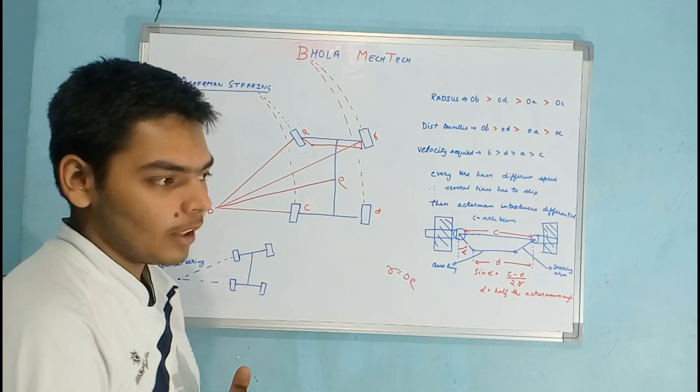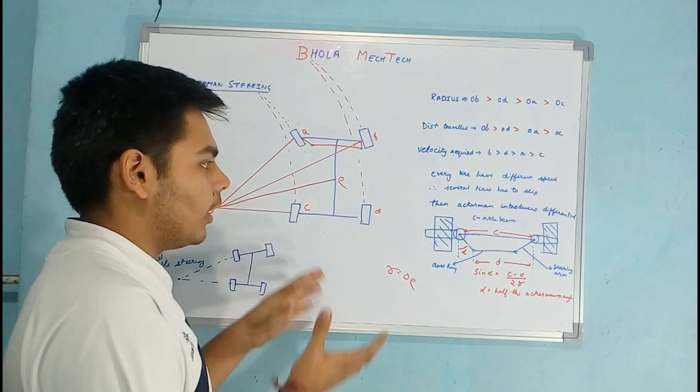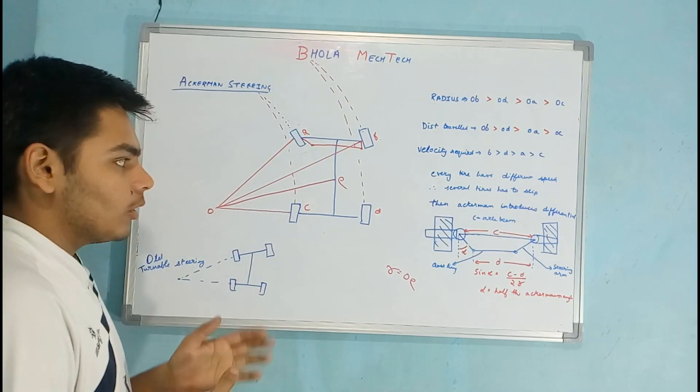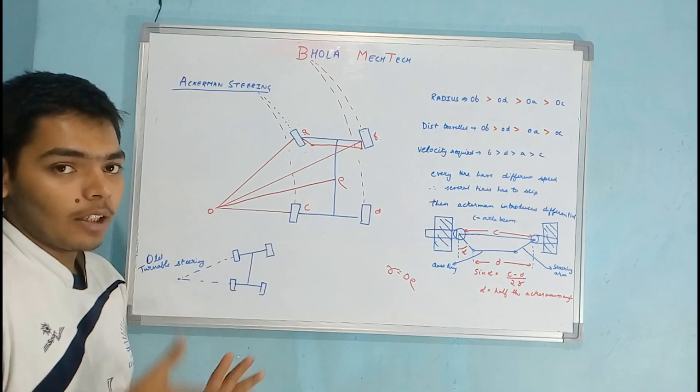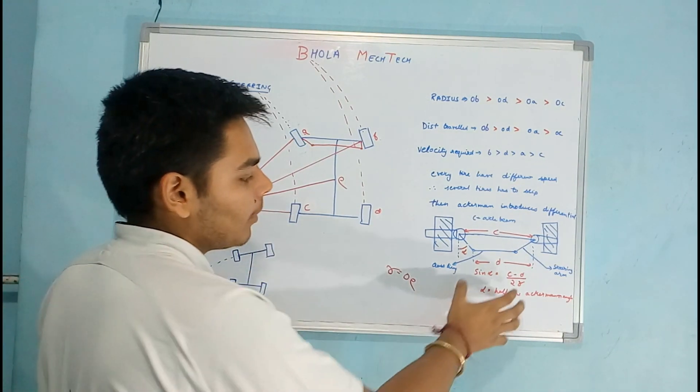Since every tire has a different speed, then there comes the need of the differential. So the differential reduces the slippage of the tire. The whole geometry can be achieved by the mathematical formula given by Ackermann.